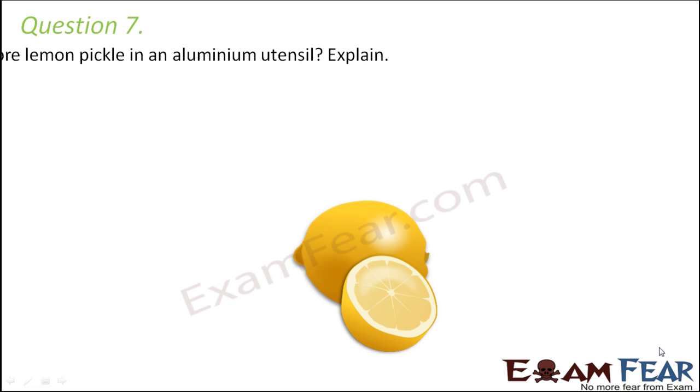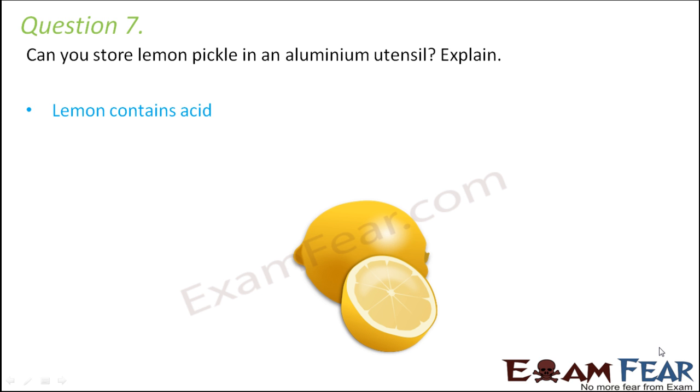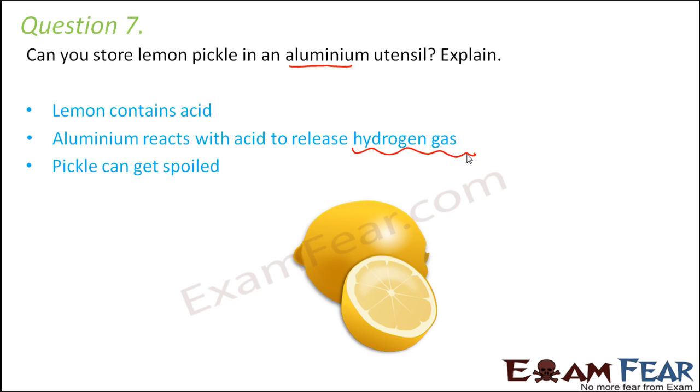Question number 7: Can you store lemon pickle in an aluminum utensil? Not really, because lemon pickle contains acid. Lemon contains citric acid, which will react with aluminum. We know that acid reacts with aluminum to release hydrogen gas, and this hydrogen gas might spoil the pickle. Therefore, it is not advisable to store lemon pickle in an aluminum utensil.